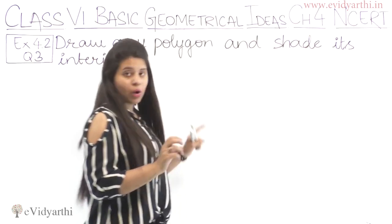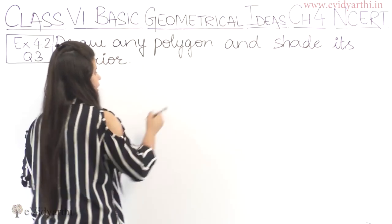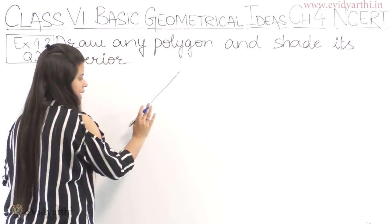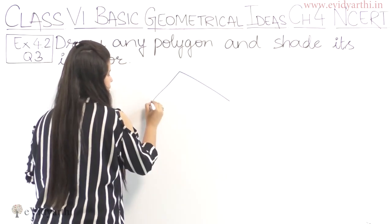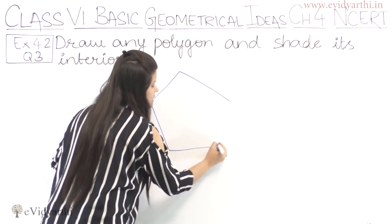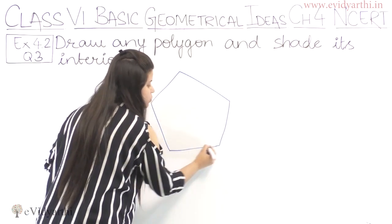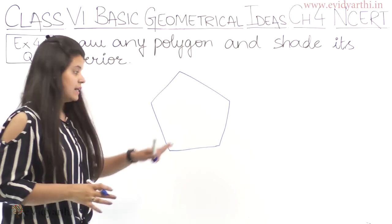So here we have a polygon problem, let's draw a polygon. This is a line segment, this is also a line segment, this is a line segment. So here all the line segments are joined, this is a polygon.